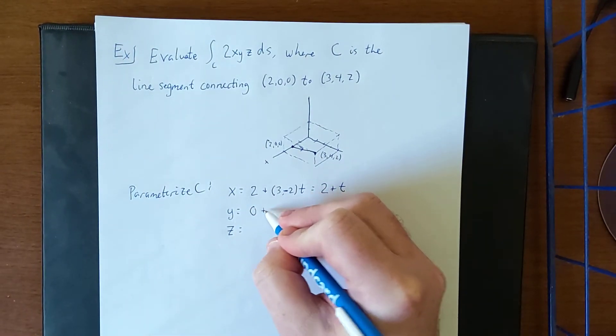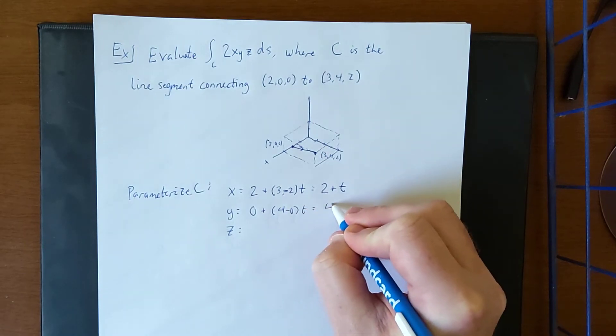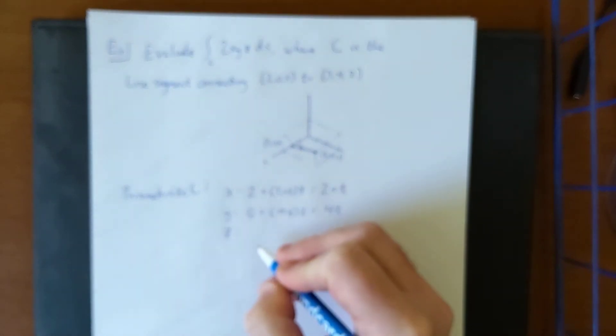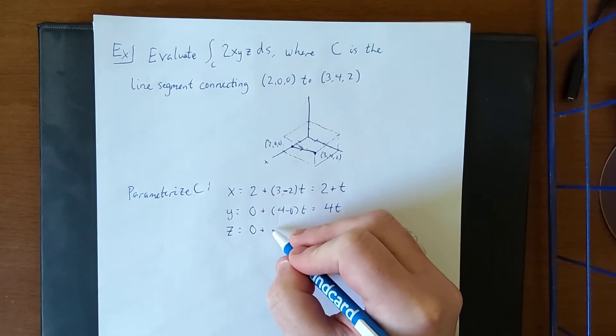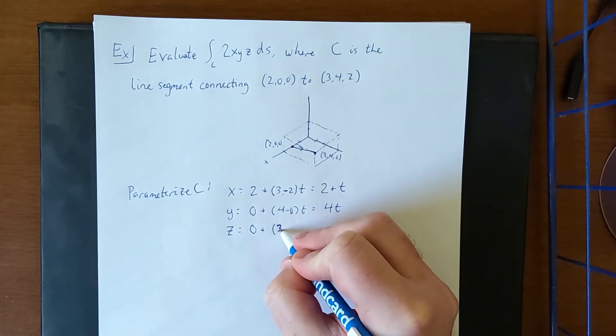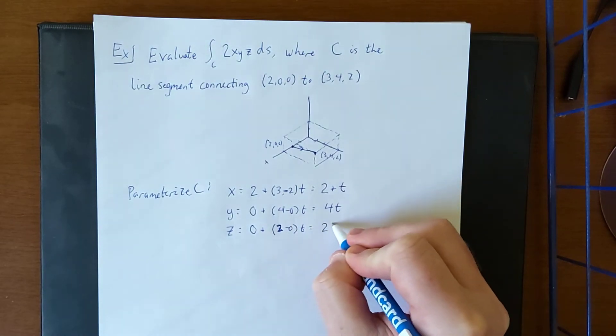y starts at a value of 0. Change in y is 4 minus 0 times t, giving us 4t. The starting point for z is 0, and we'll be doing 2 minus 0 for the change in z. So this will be 2t.